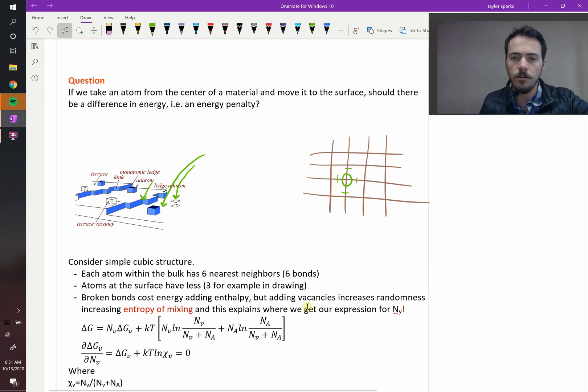But in general, when you pull it out of the center, it had six bonds. And when you put it on the surface, let's say it has only three, that means that you have an enthalpy penalty. You have to pay a penalty in terms of bonding changes. So if it's not enthalpy that's driving this to happen, then it must be entropy.